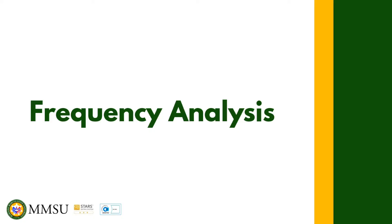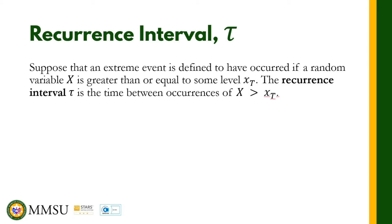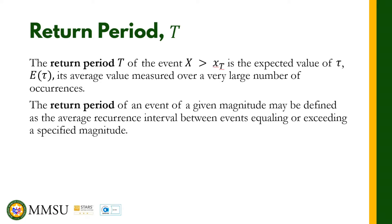Let us talk about frequency analysis of hydrologic data and define some terms. The recurrence interval, with symbol tau, is the time between occurrences where a random variable x is greater than or equal to some level x sub t. The return period is the expected value — that is, the average value — of the recurrence interval measured over a very large number of occurrences. The return period of an event of a given magnitude may be defined as the average recurrence interval between events equaling or exceeding a specified magnitude.